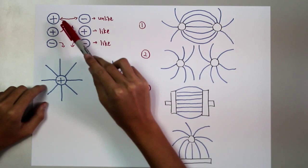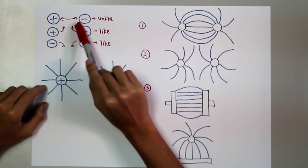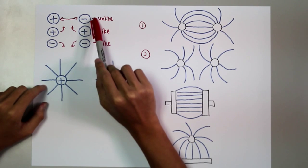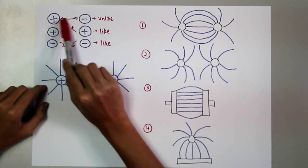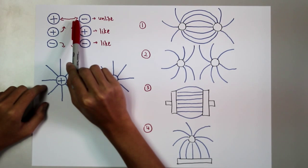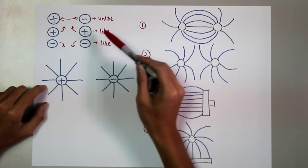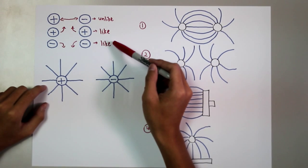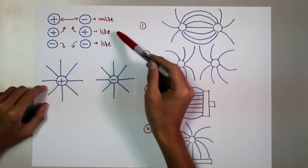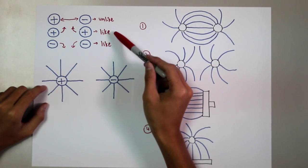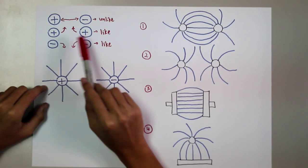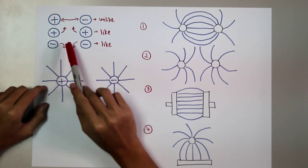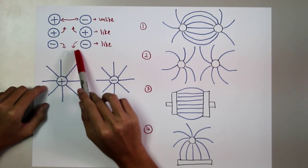For the first case, both charges are unlike charges, so they attract. While for the second and third, they are like charges, so both of them repel.